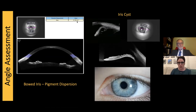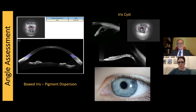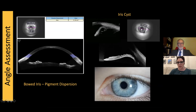Another interesting use of anterior segment OCT is for iris cysts. This is a young lady — this is the UBM of her iris cyst, and we can see it very nicely on the anterior segment OCT as well. We've been repeating this frequently to make sure it's not changing in size. The patient is 12 years old — getting a UBM with contact on the eye is very difficult. The OCT is obviously a much less invasive way to image the same patient.